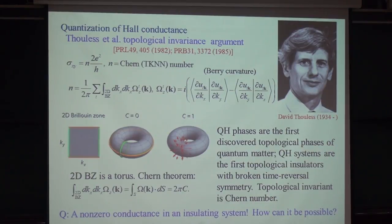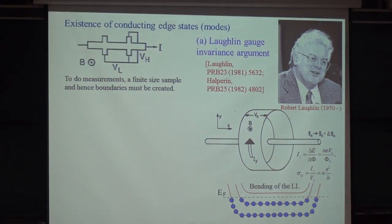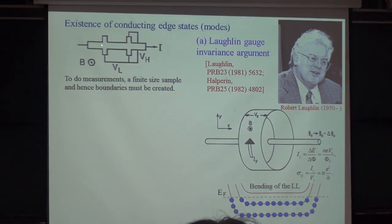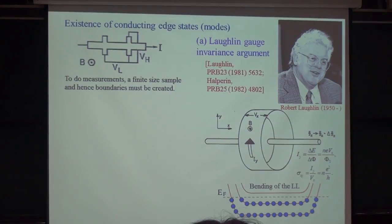To understand that, we have to know that physics is an experimental science. To do a measurement, you need to cut this infinite two-dimensional system into a finite system. For example, if you want to do a Hall measurement, you need to cut from a two-dimensional system into a finite-sized Hall bar. The answer is that in this kind of topologically non-trivial system, you have metallic edge states.